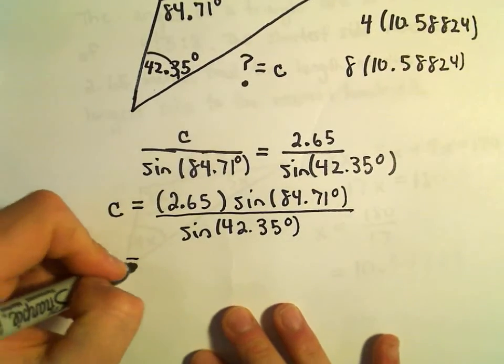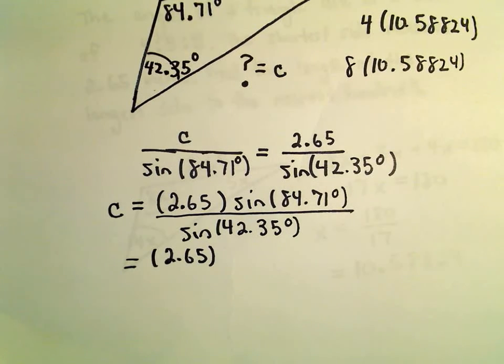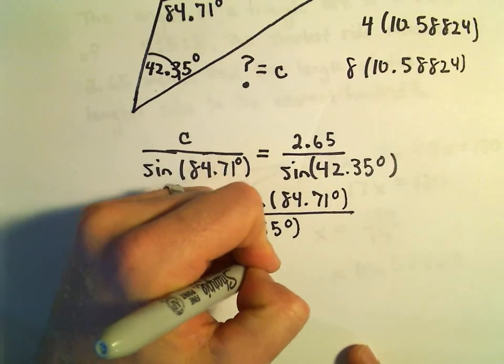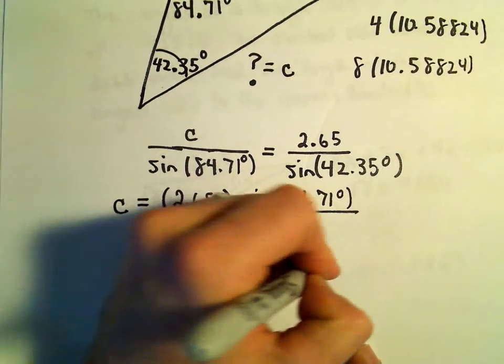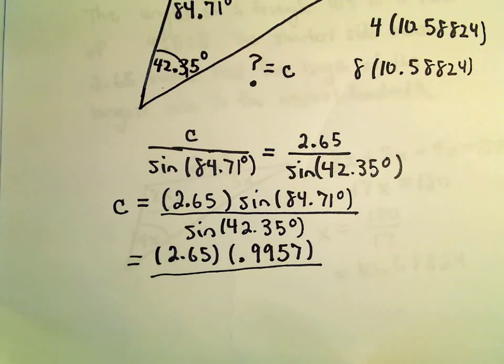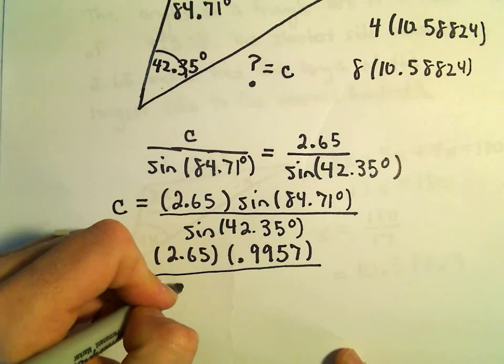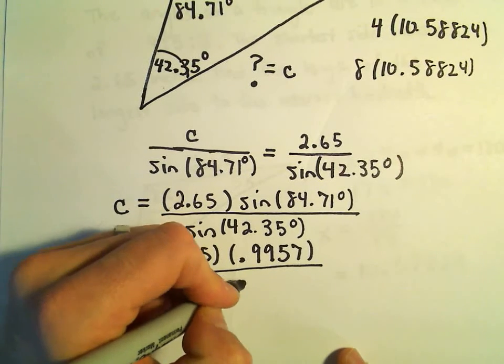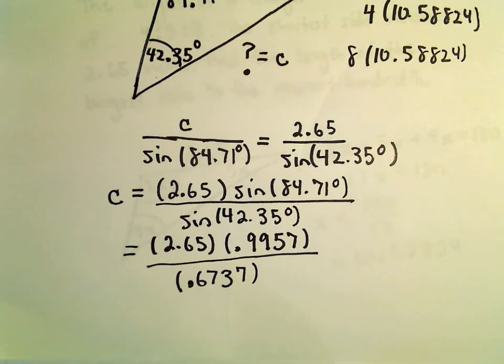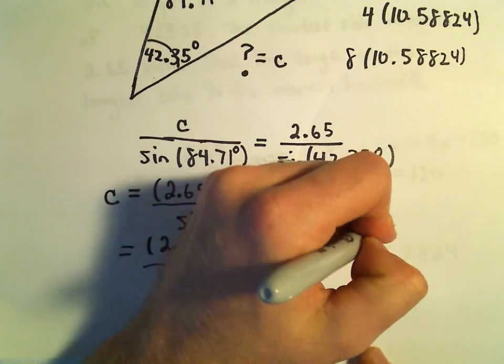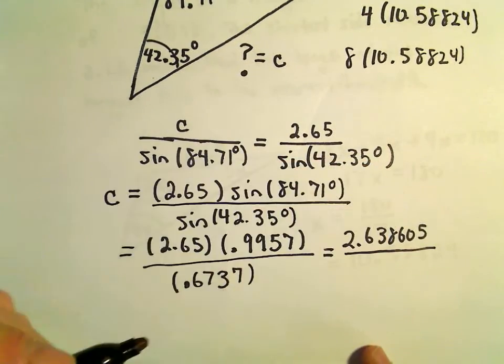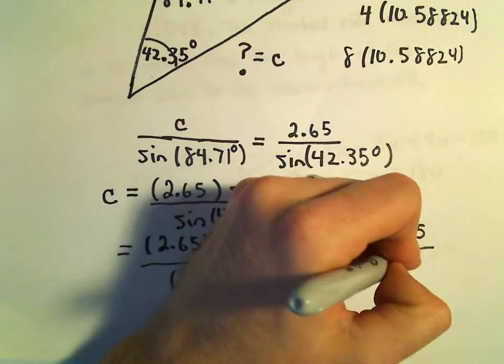And again, now just start plugging stuff into a calculator. So let's see. Let's do sine of 84.71. So 84.71. I'll take the sine of that. I'm getting that to be .9957. And the denominator, we'll get the sine of 42.35. So when I take sine of that, I'm getting .6737 after rounding. And now it's just a little bit more multiplication. So 2.65. I'll multiply that by .9957. I'm getting that to be 2.638605.